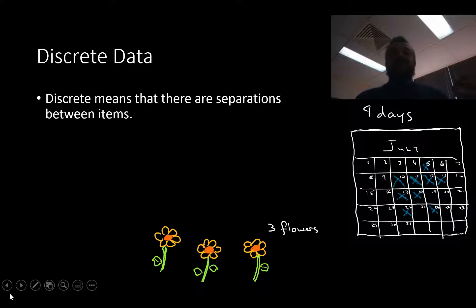All right, discrete data. So discrete means that there are separations between the two items, right? So for example, down here, we have three flowers, or we have nine days highlighted. You cannot have a day and a half in this sort of account. You can't have three and a half flowers. You have a flower, a flower, a flower. There's no middle flower. So there's a separation between items. So you have a box, two boxes, three boxes, one package, two package, and so forth.